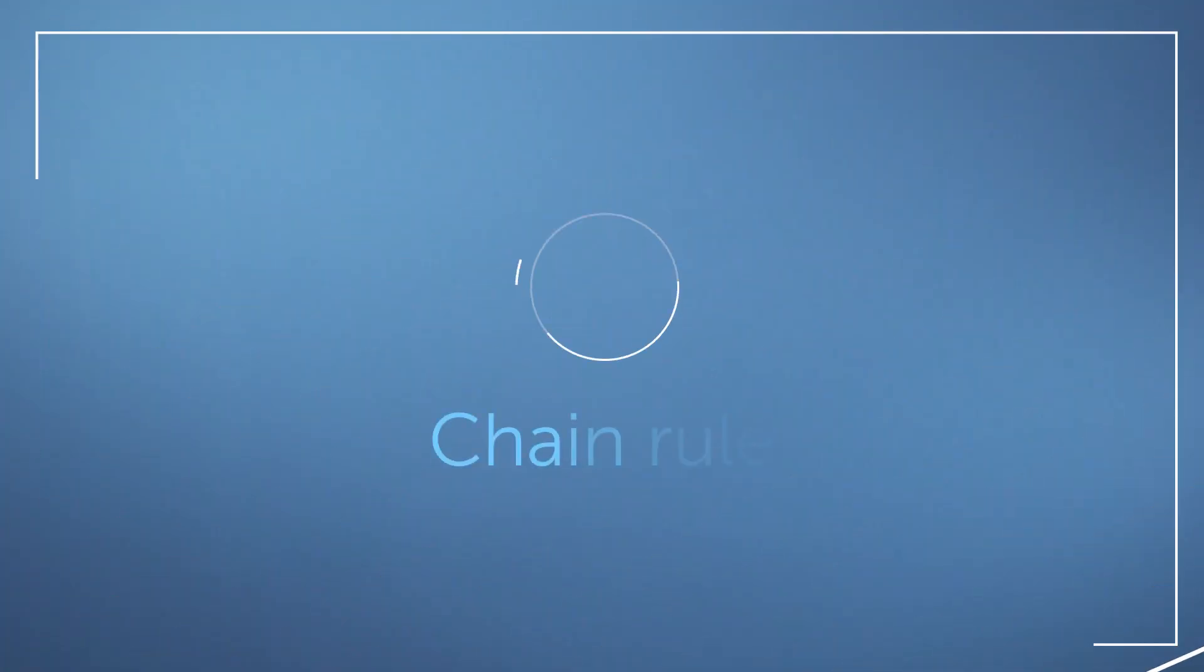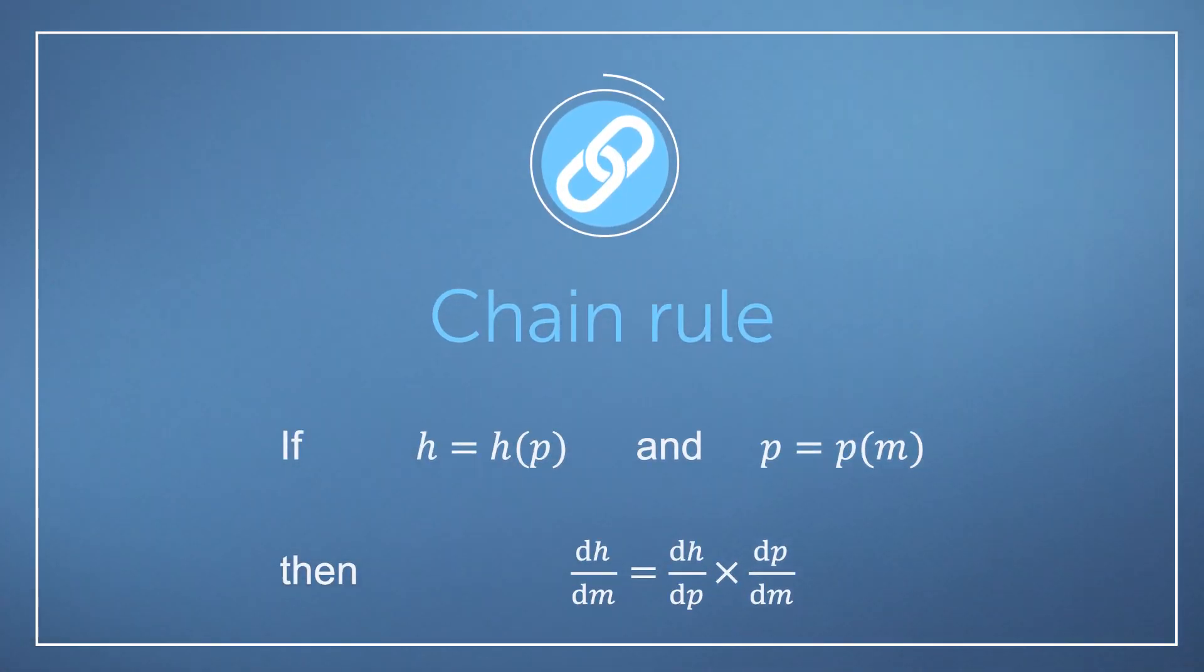What's magic about the chain rule is that for some real world applications, we may not have a nice analytical expression for our function, but we may still have the derivatives. So being able to simply combine them with the chain rule becomes very powerful indeed.